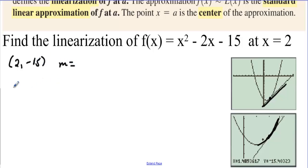The derivative, the slope, we want to find the slope, so let's take the derivative, f prime of x equals 2x minus 2. And we're evaluating this at x equals 2, which is equal to 4 minus 2, which is equal to 2.